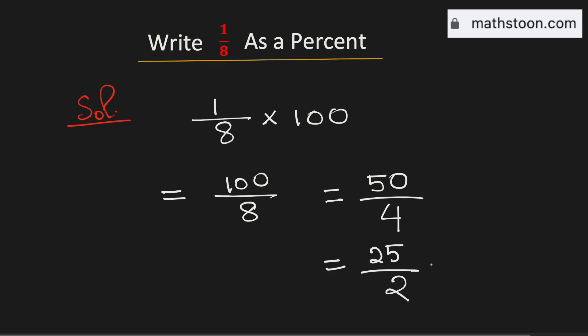Now if we write this as a decimal, this will be equal to 12.5. Therefore, 1 over 8 as a percent is equal to 12.5%. And this is our final answer.